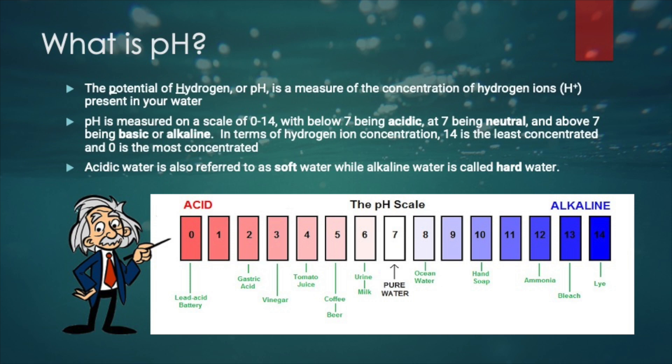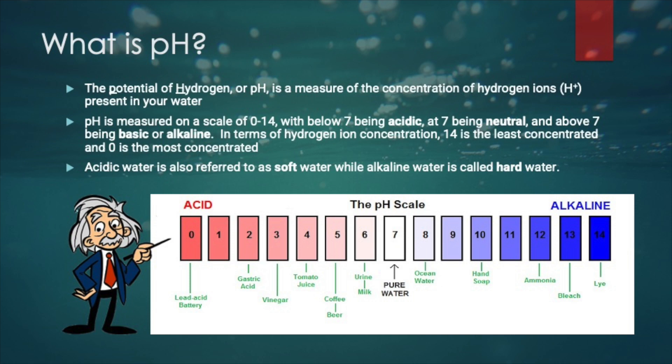Therefore, it is important to keep the pH value as stable as possible. If you want to tweak it, make very small and careful steps. Certain fish or species are more picky about pH levels, so it is wise to adapt your population to it. This could lead to multiple tanks or ponds, but fish just thrive better when you can give them the ecosystem they are used to.